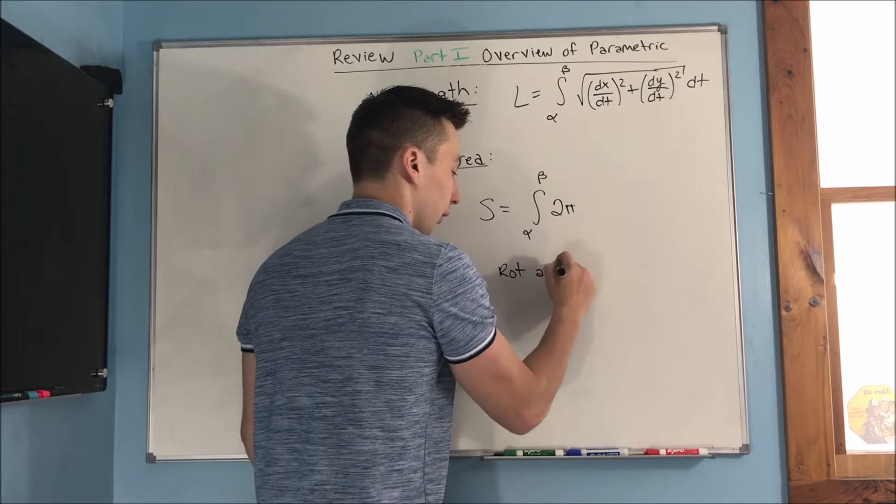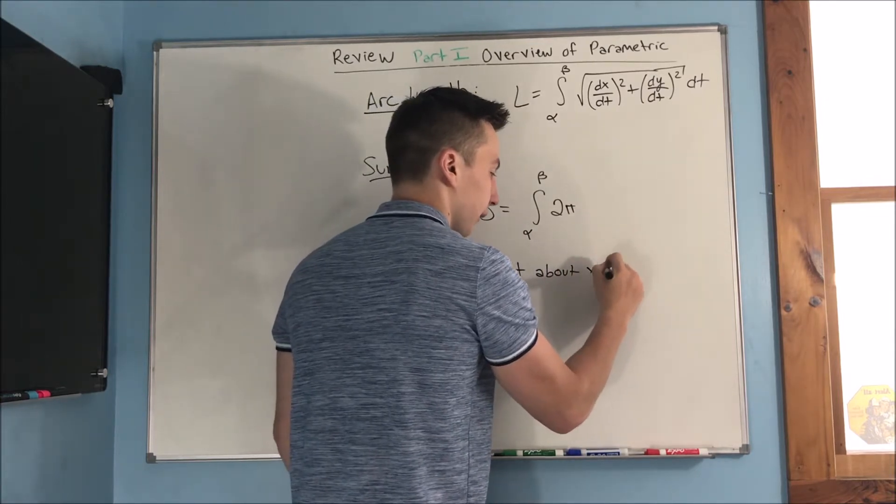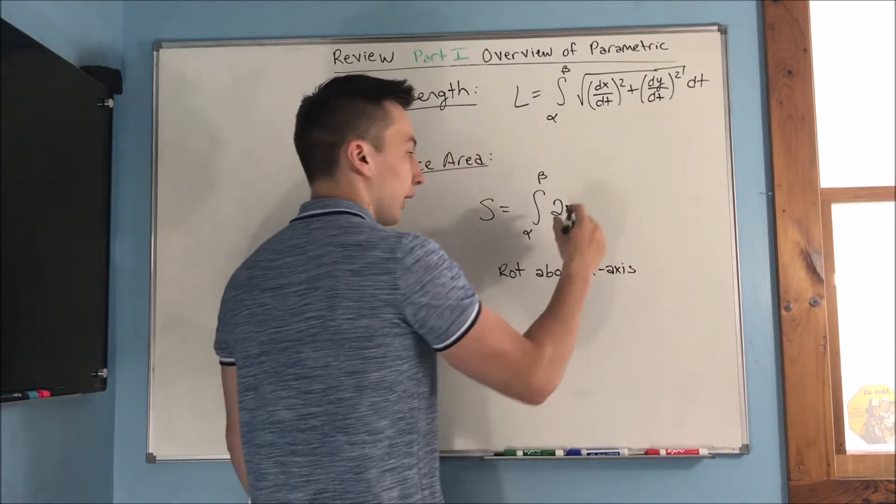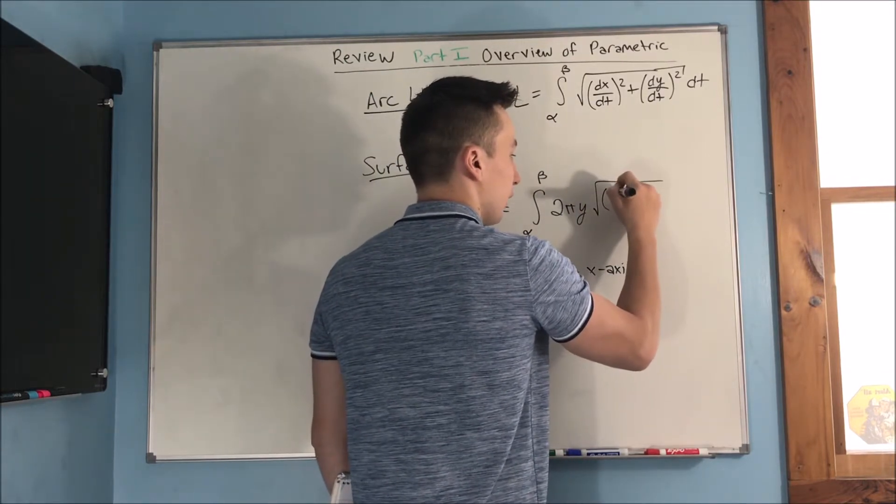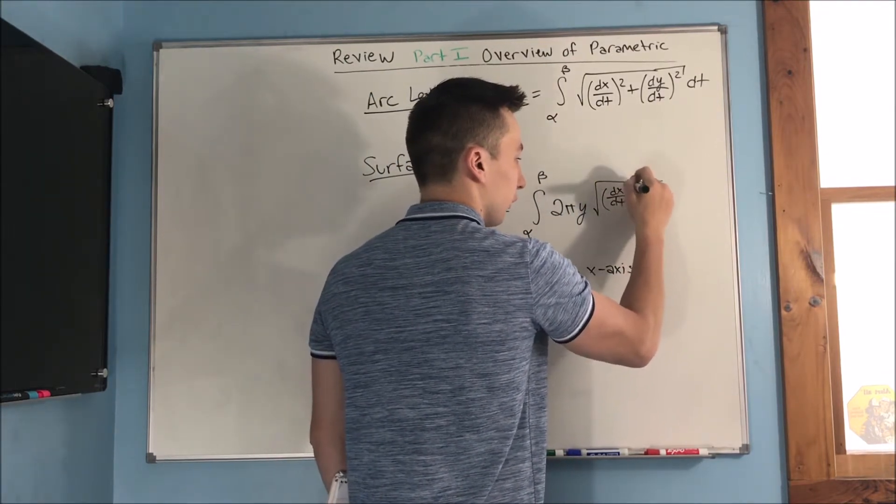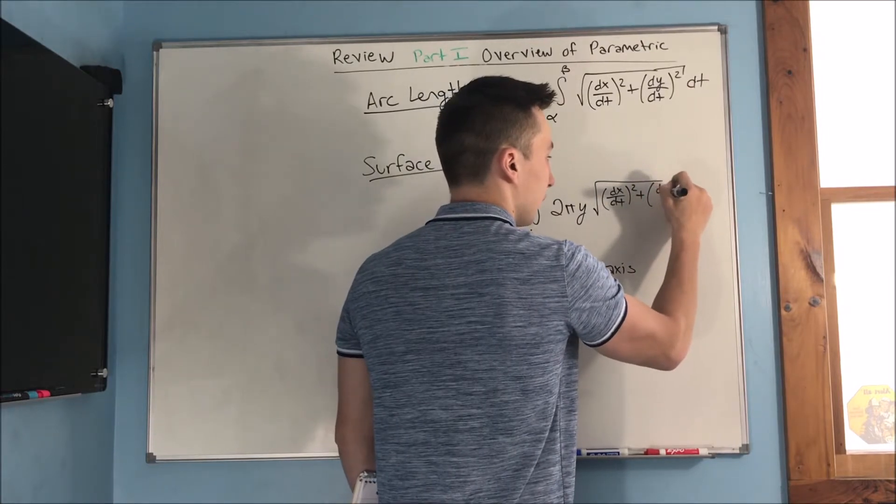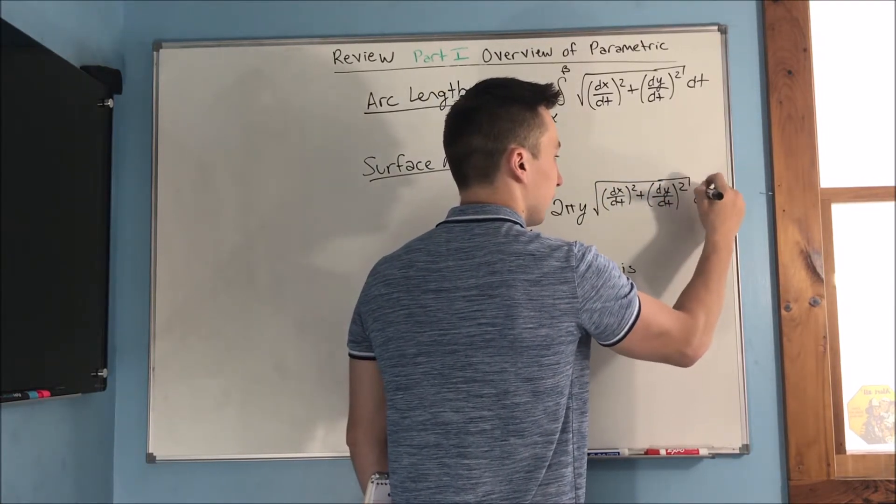So rotation about x axis, that's going to give us a 2 pi y, and then we have a square root of dx dt squared plus dy dt squared dt.